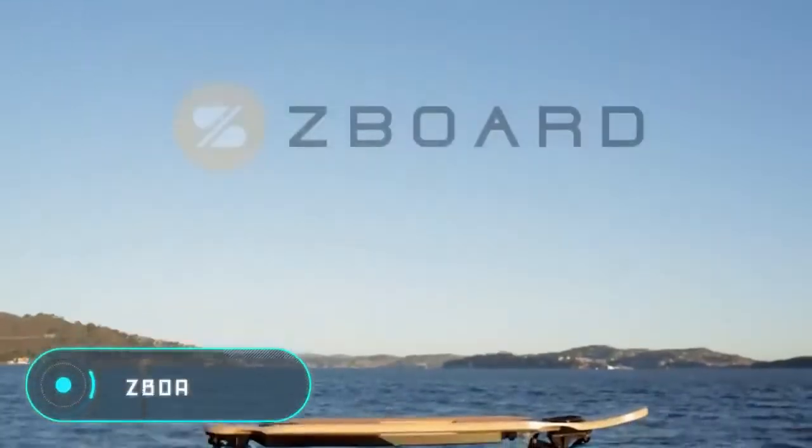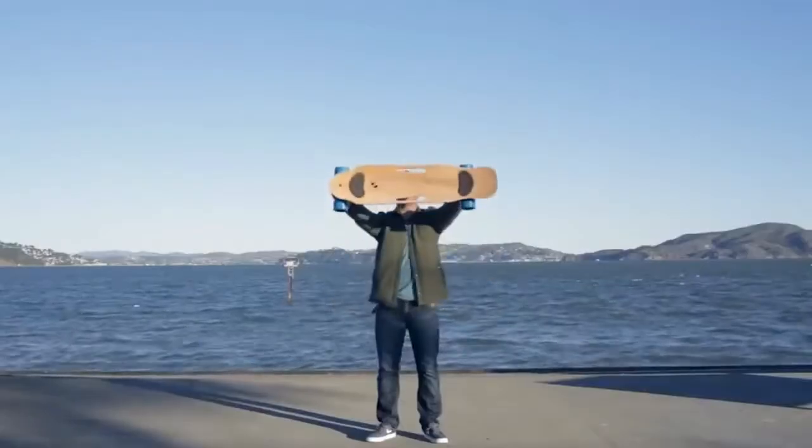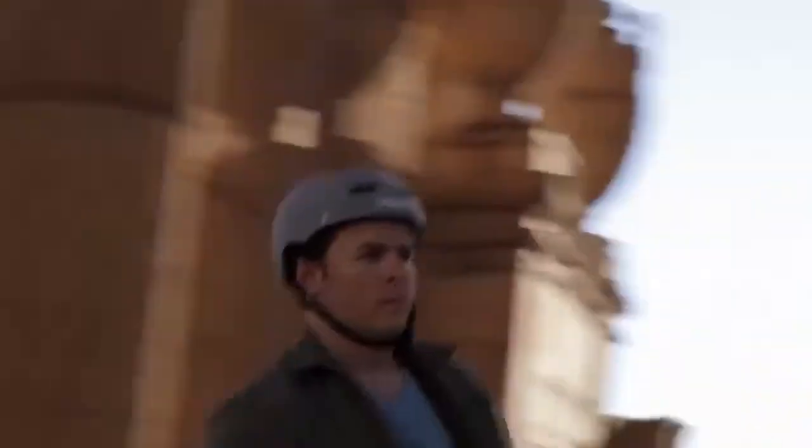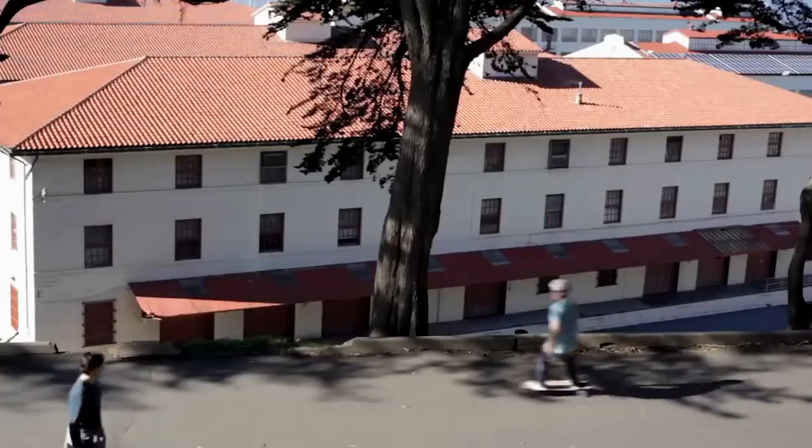Z Board 2. The creators of this invention claim that this electric skateboard is the lightest, fastest and longest in the world. It's very easy to handle and is perfect even for beginners. To accelerate, just press the foot pad in the front and to brake, press the back foot pad.